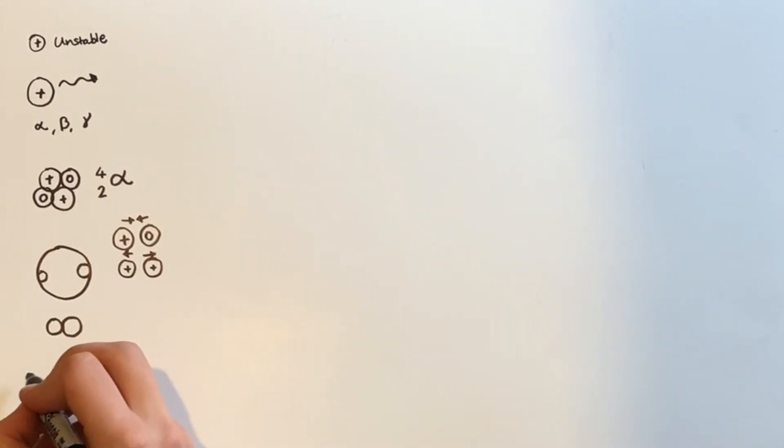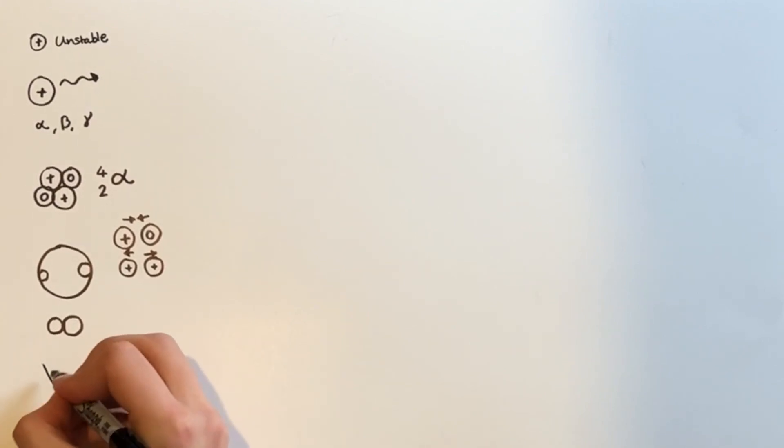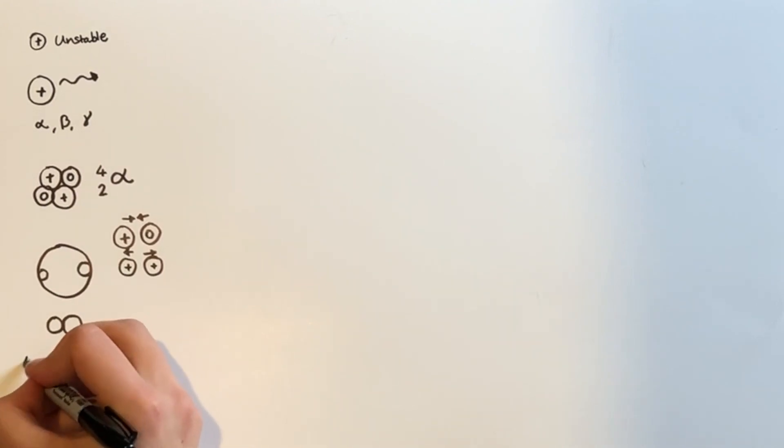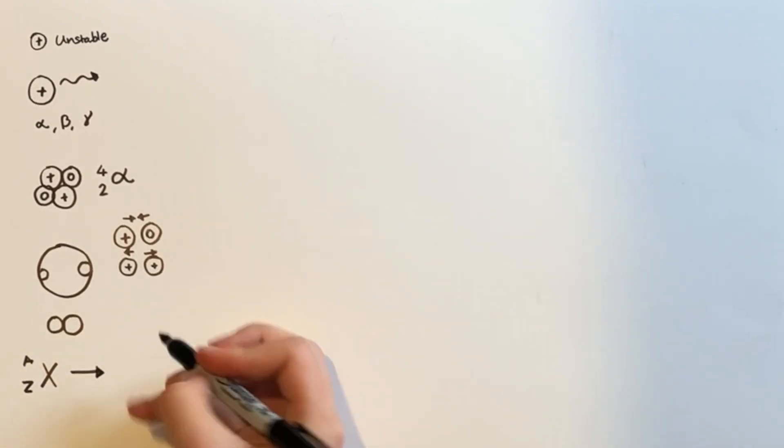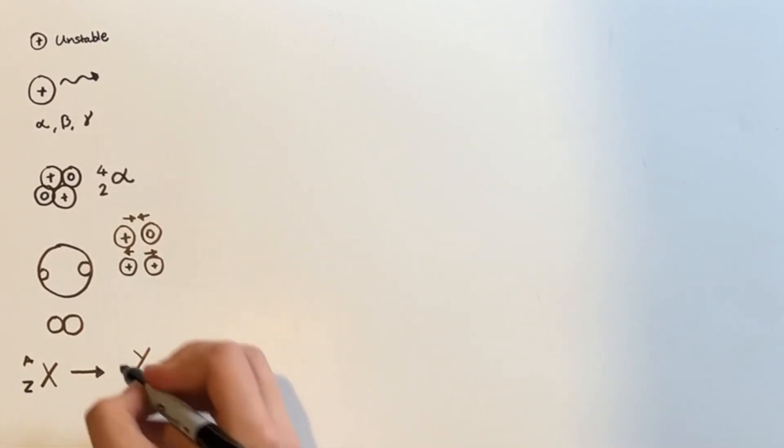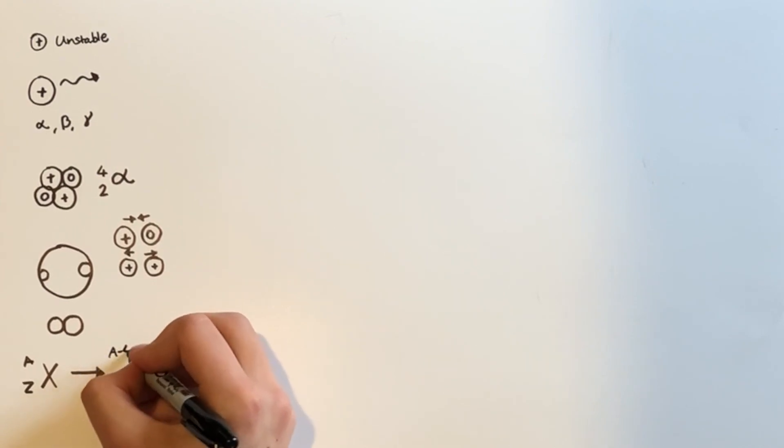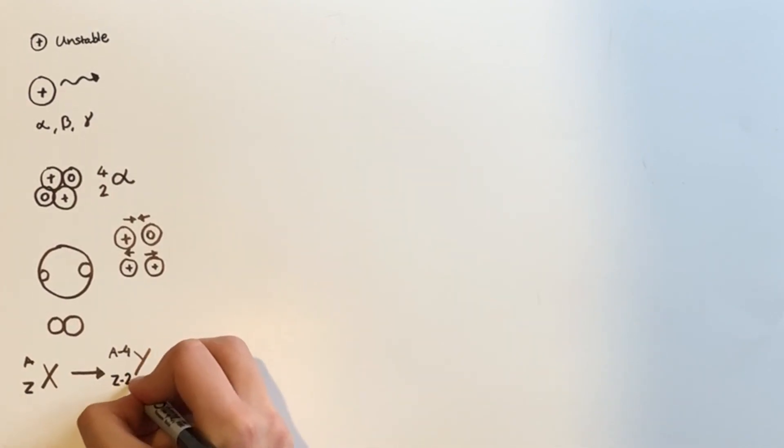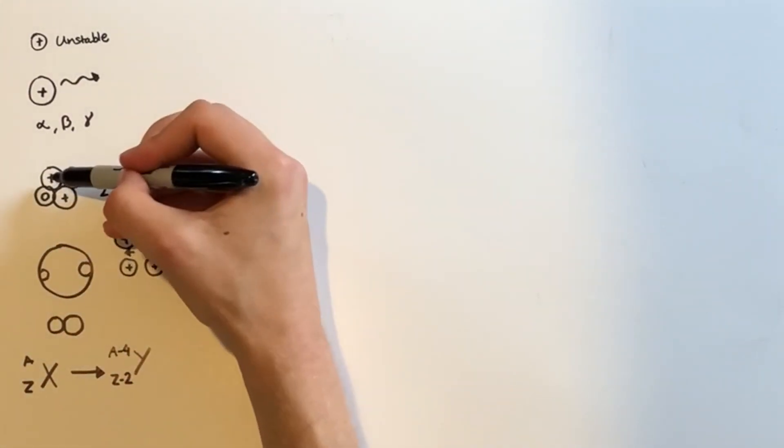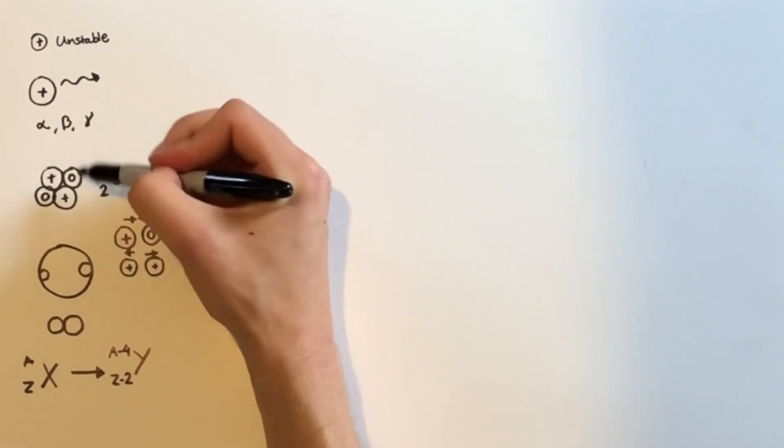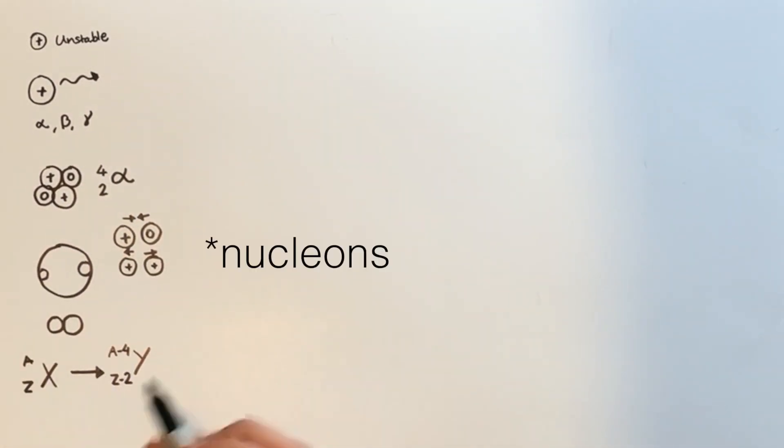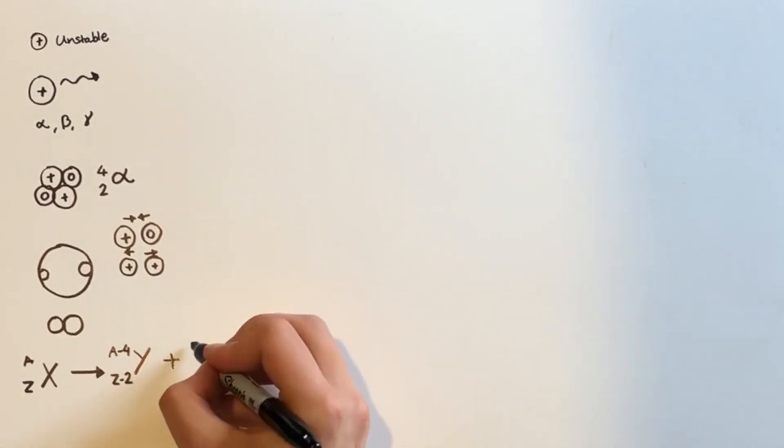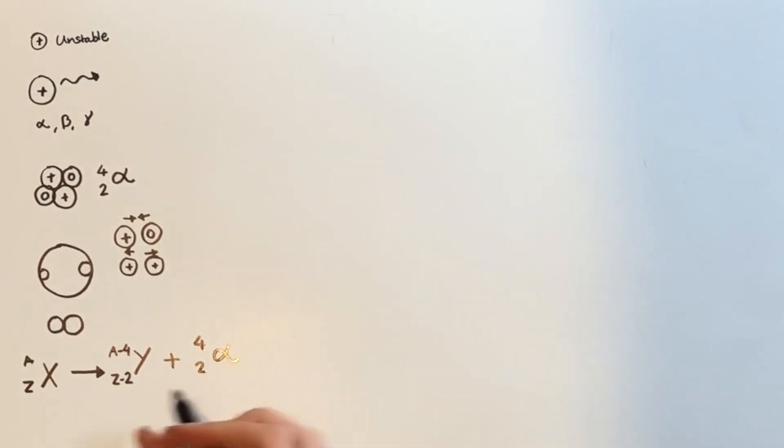And that is basically what happens in alpha decay. We can normally write this reaction using the following equation, that say we have a parent nucleus X, which has a nucleon number of A and a proton number of Z, it will then decay to a daughter nucleus, which we'll call Y for the sake of argument, and it's going to have four less nucleons and two less protons. Because of course, proton numbers decrease by two, because there's two protons in an alpha particle, and the total nucleon number of an alpha particle is four. And obviously, you're going to get the alpha particle as well. So that's a very typical reaction equation for alpha decay.